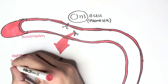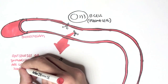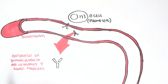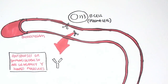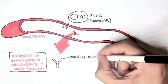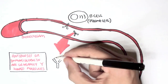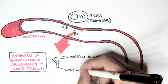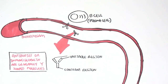Antibodies, or immunoglobulins, are generally Y-shaped. What's really important to know is that antibodies contain a variable region, or FAB region, and a constant region, or the FC region. As the name suggests, the constant region stays the same, and the variable region can be different.